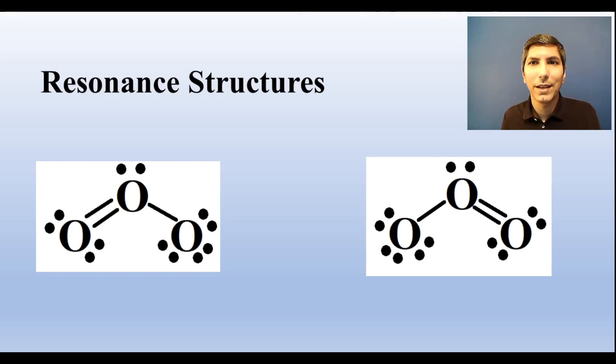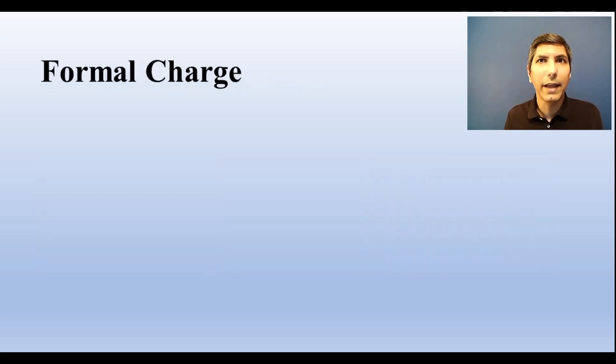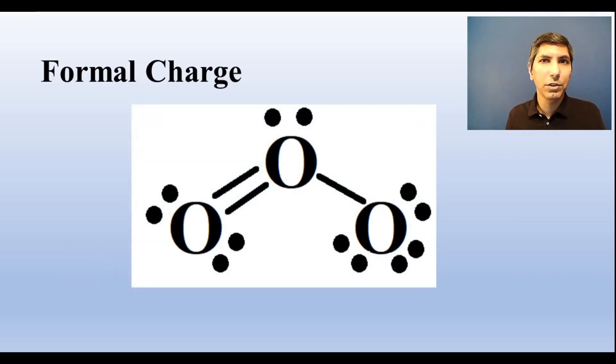You need to be able to determine the formal charge of any atom in a molecule. To calculate formal charge, just take the number of valence electrons an atom has based on its location on the periodic table, then subtract the number of electrons assigned to it in the Lewis diagram, counting each bond as one.